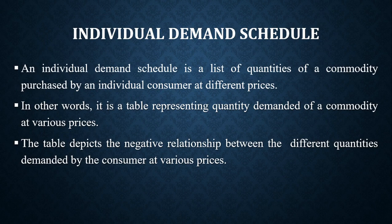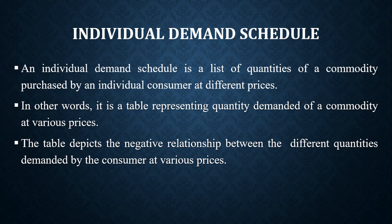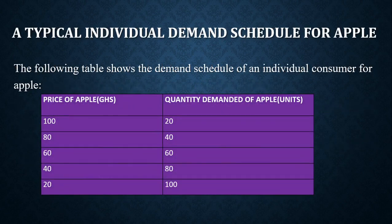Now we'll talk about the individual demand schedule. A demand schedule is basically a table. An individual demand schedule is a list of quantities of a commodity purchased by an individual consumer at different prices — in other words, a table representing quantity demanded of a commodity at various prices, depicting the negative relationship between price and quantity demanded.